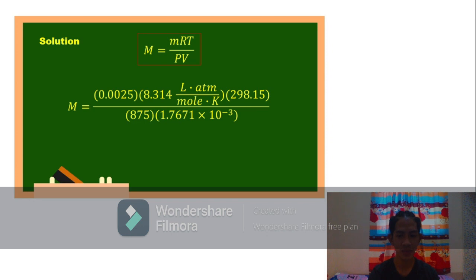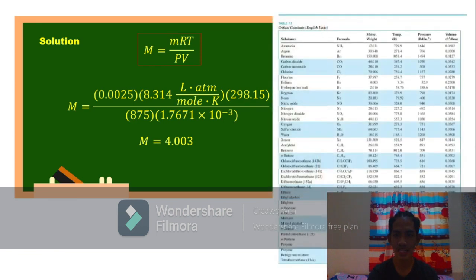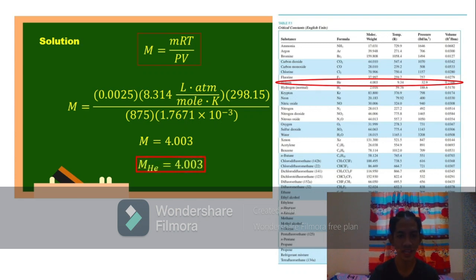By calculating it, we can solve it and we get the answer of molecular mass equal to 4.003. By looking at table A.5, we see that helium has a molecular weight which is equal to 4.003. And the unknown gas of the question above is helium which is our final answer.